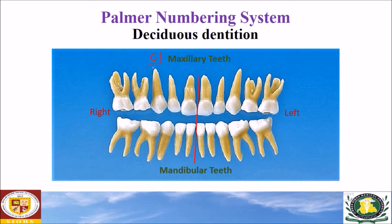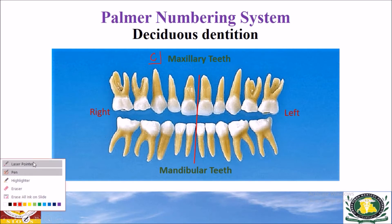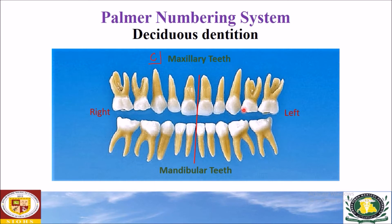The letter C is used with a symbol because it is the canine of the right side in the maxillary arch. For the maxillary left second molar, counting from the midline: central incisor, lateral incisor, canine, first molar, and second molar — that is E. We write E in capital letters together with the symbol indicating the maxillary arch of the left side.